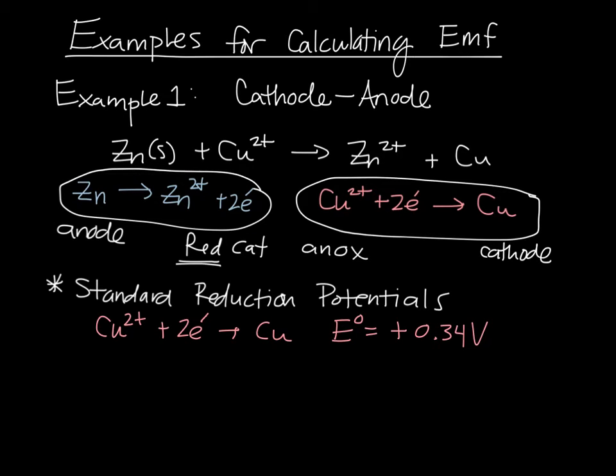And the anode, the zinc reduction potential, which is written backwards, don't let that confuse you, is written as negative 0.76 volts.